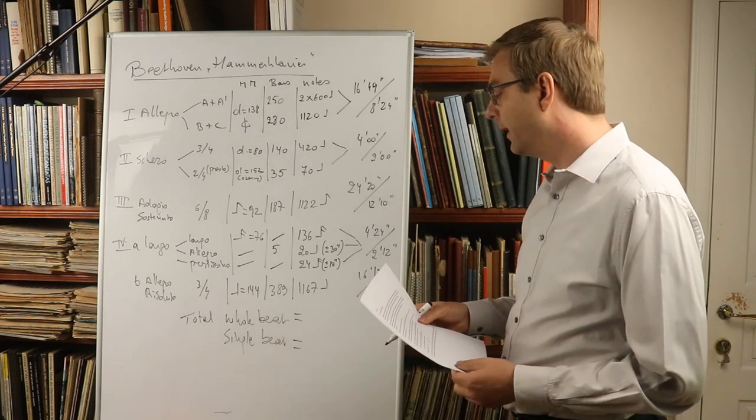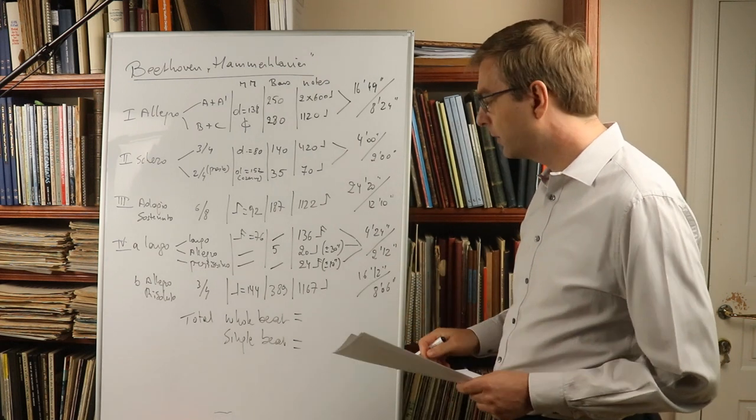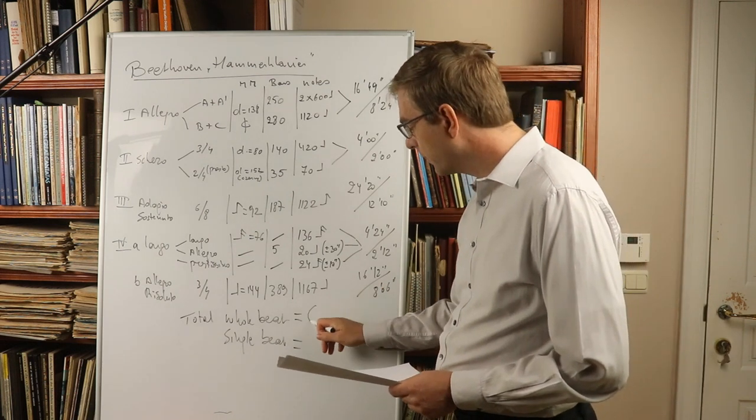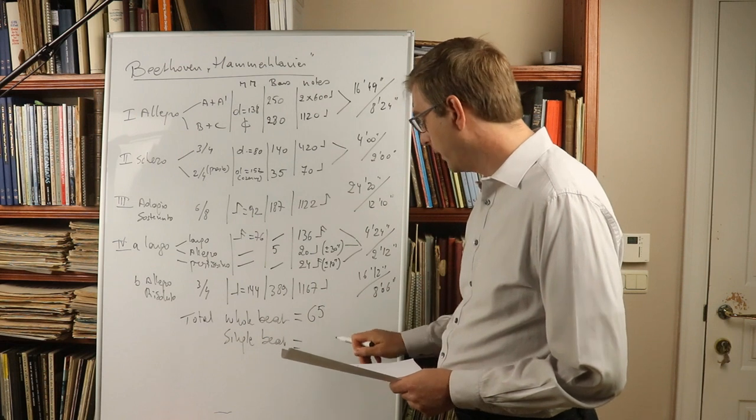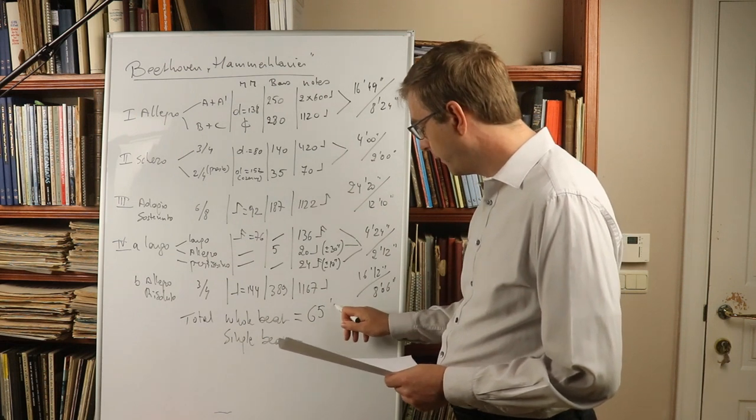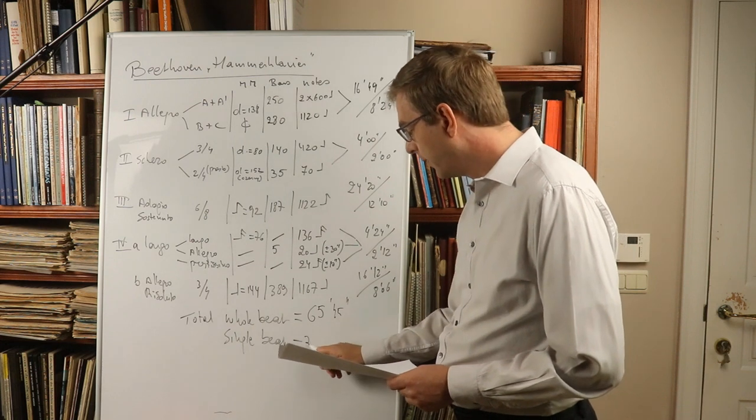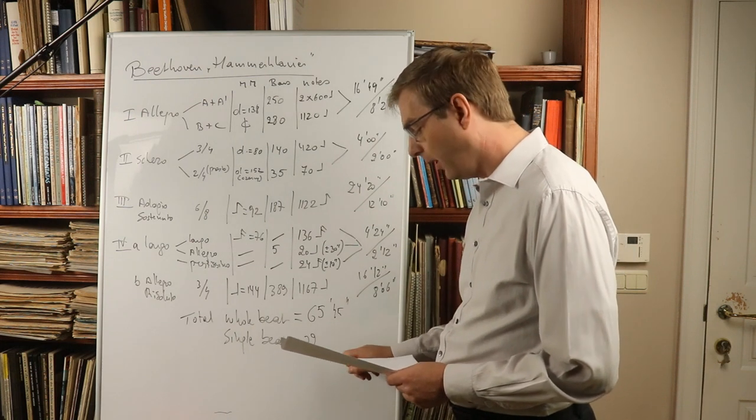Now of course the interesting thing is what is the total result? The total result in whole beat for the Hammerklavier sonata is 65 minutes and 45 seconds. So obviously in single beat that's half of that.